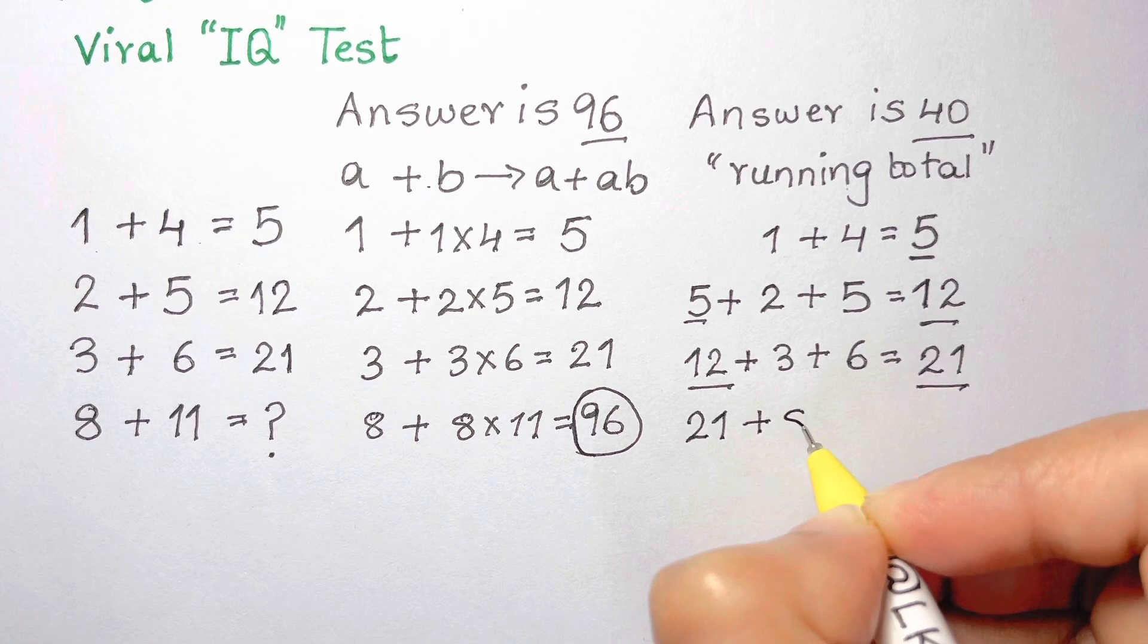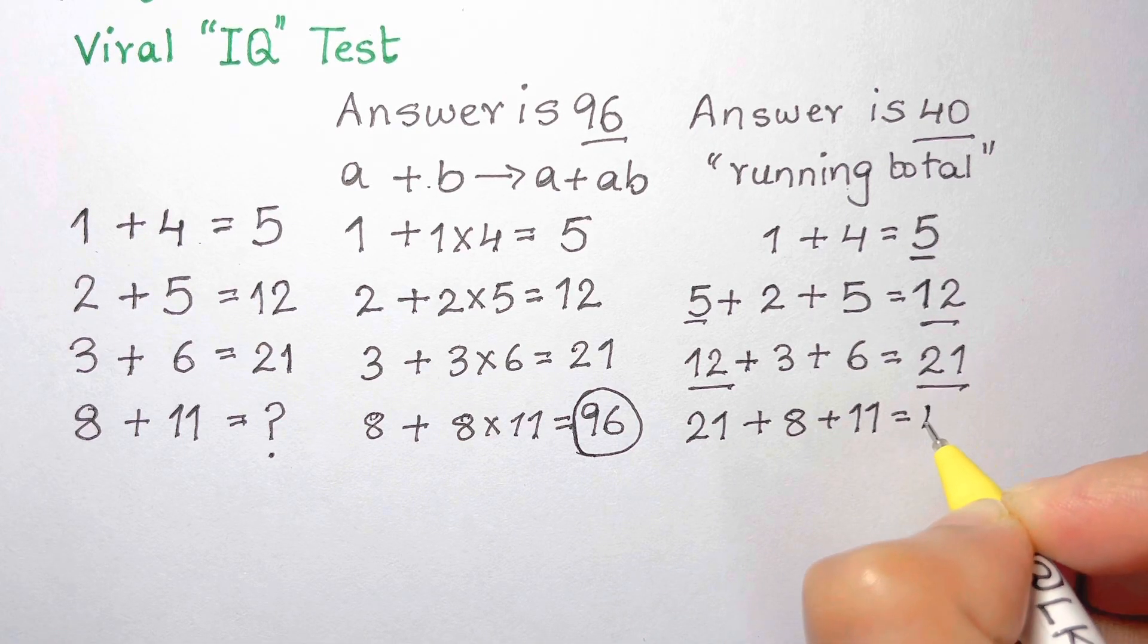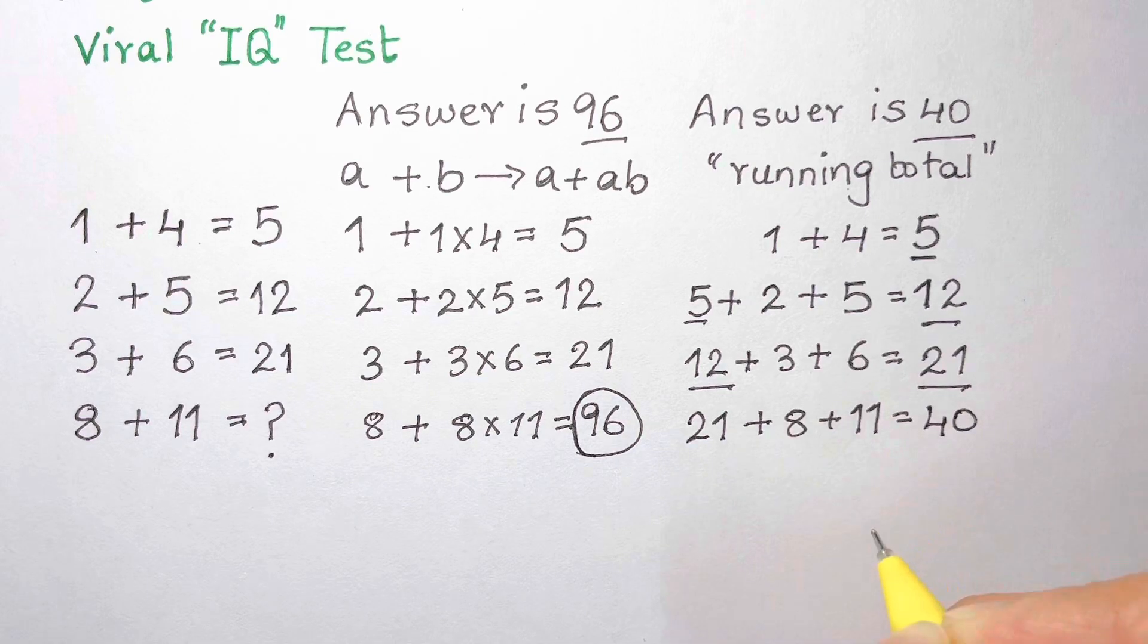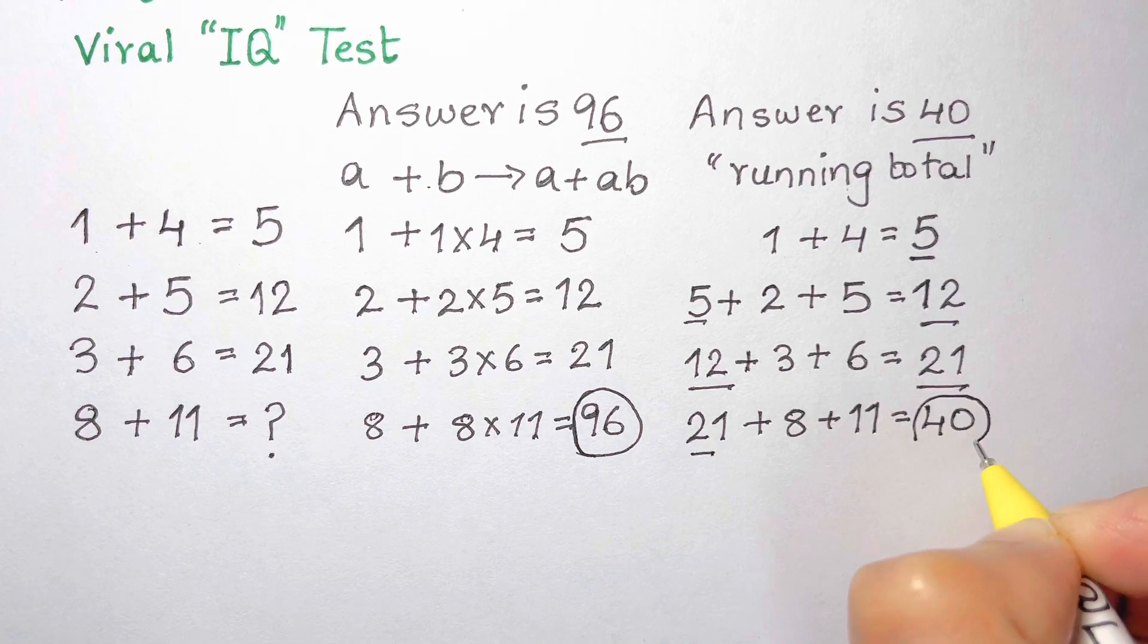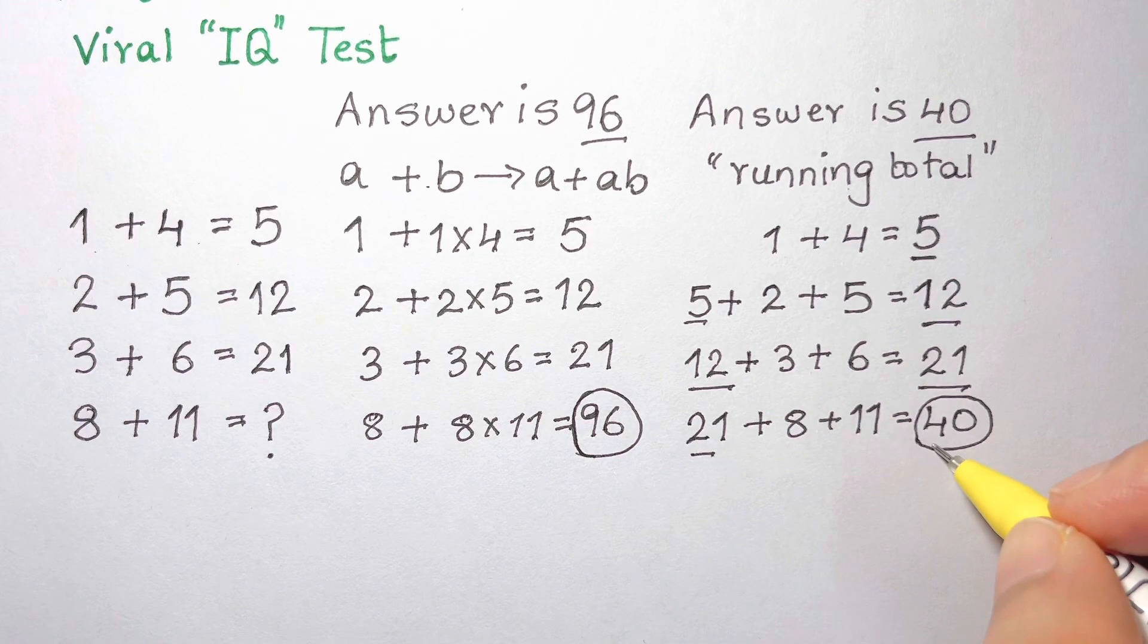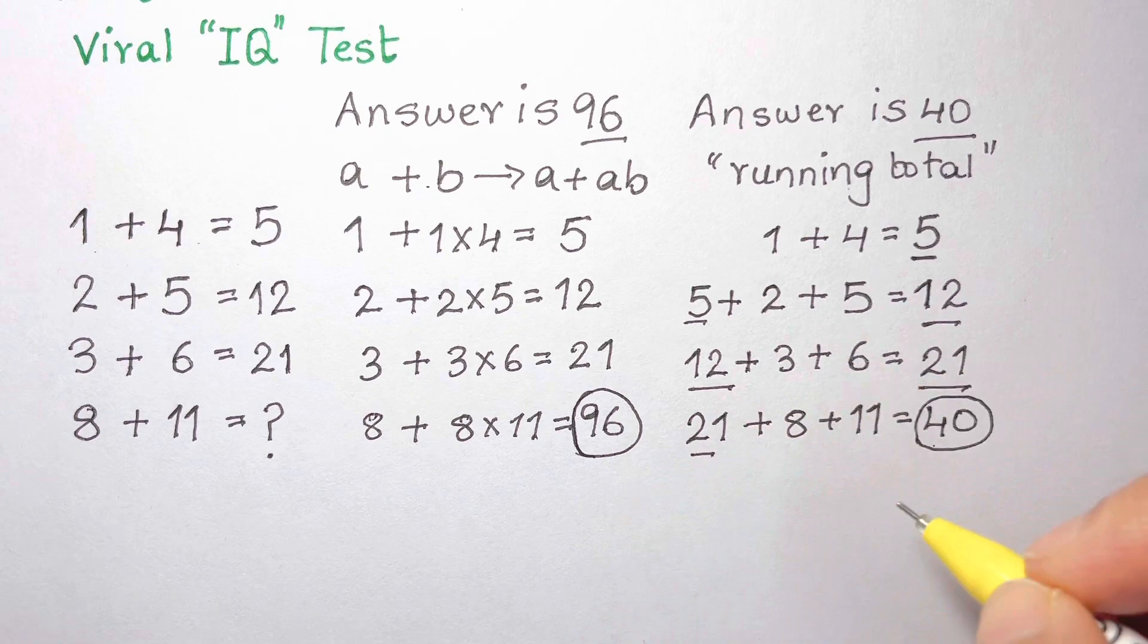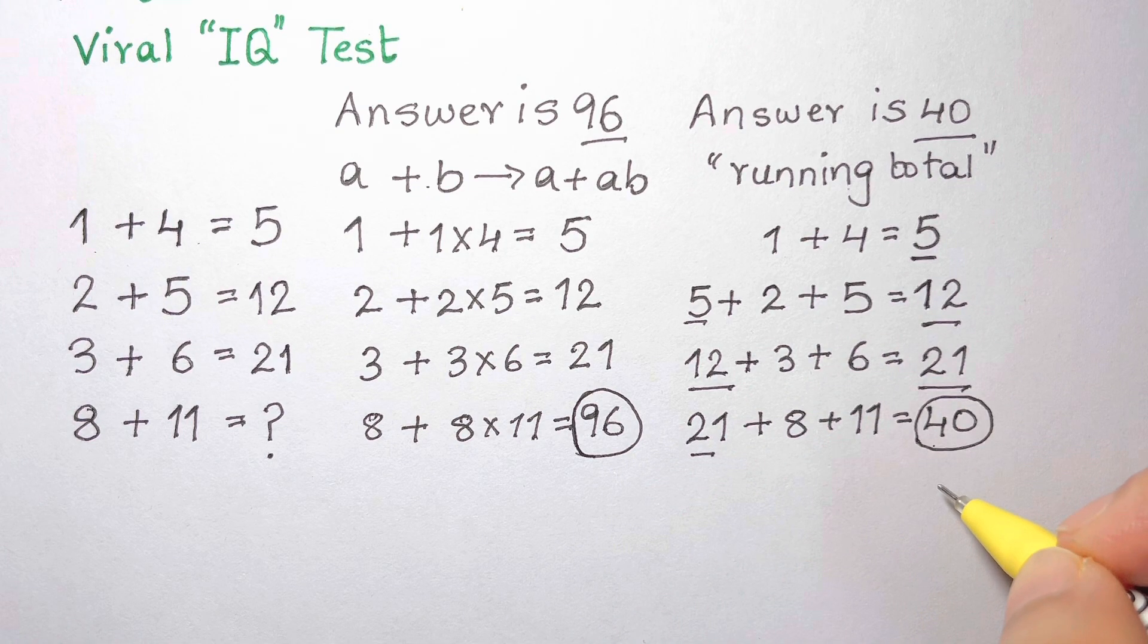We then take 21 and add that to 8 plus 11, and that gets us to the other answer of 40. So many people were debating whether the answer should be 96 or whether it should be 40.